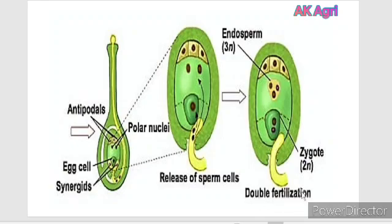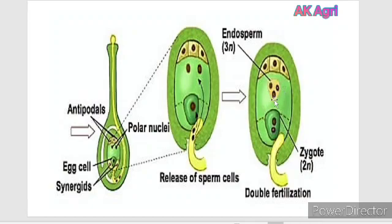Double fertilization is nothing but the fusion of one sperm cell with the egg cell, leading to the development of the zygote, and another sperm cell with the two polar nuclei. These two fertilizations happen simultaneously — that is why the name is double fertilization. Whereas triple fusion involves the fusion of two polar nuclei and one sperm cell.